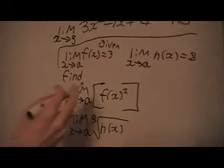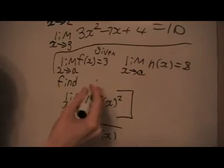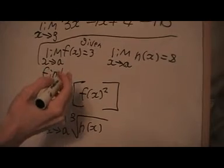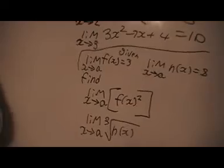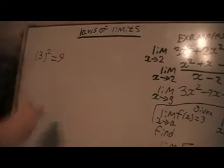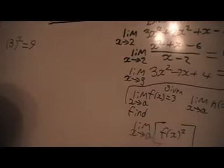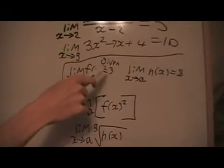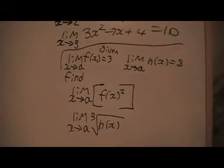And one more quick problem before we finish using these laws that I showed you before. We're given these, so we're told that that's 3. So what we can do is we can calculate this, and basically what we can do is we can just square that. 3 squared is 9, using the law, because when we know the limit, we can just square the answer. So that's using one of the laws we learned earlier.